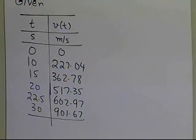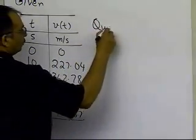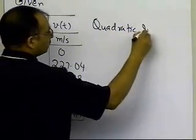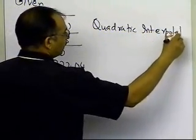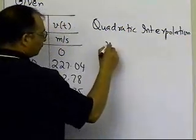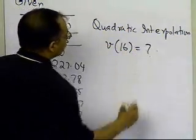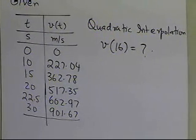These are the velocities which are given to us, and we are asked to do Lagrangian interpolation — specifically quadratic interpolation — using the Lagrangian interpolation form to find the value of velocity at t=16. That's the example statement, so let's go ahead and look at what the solution is.